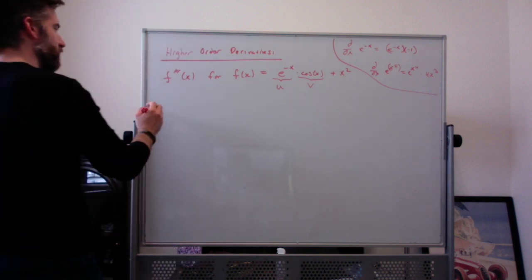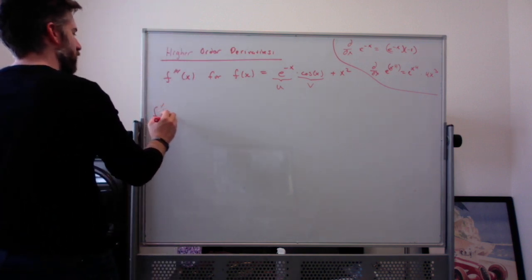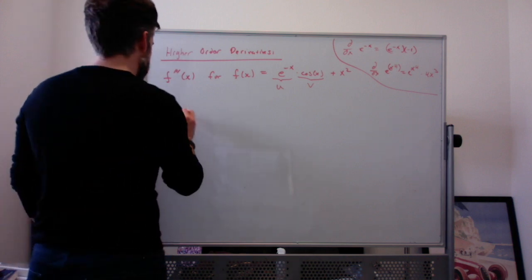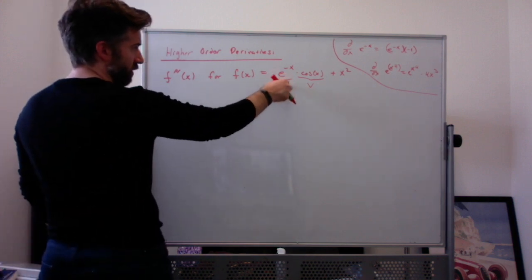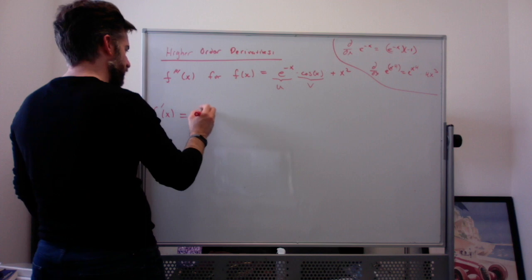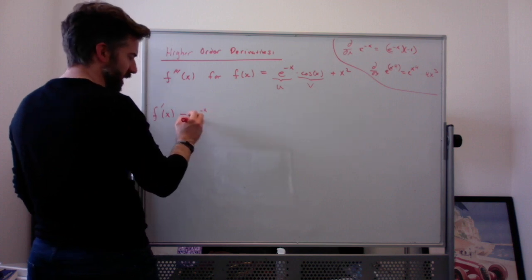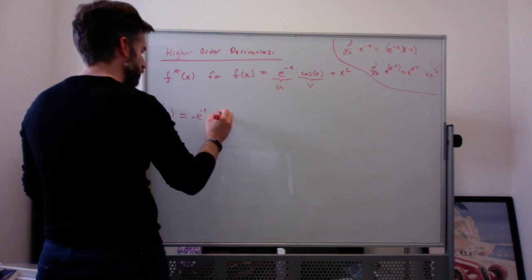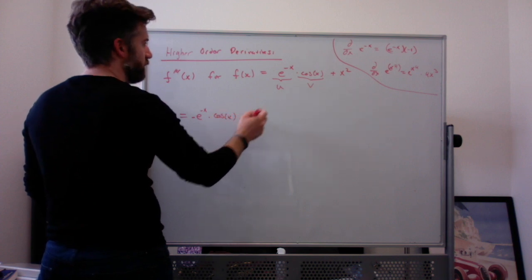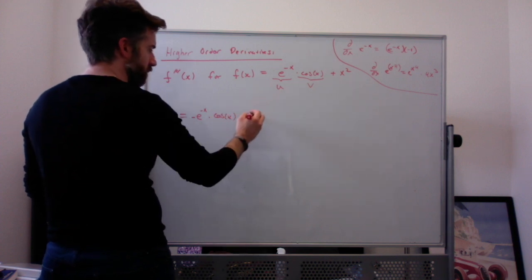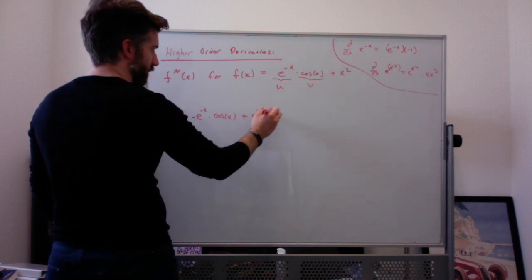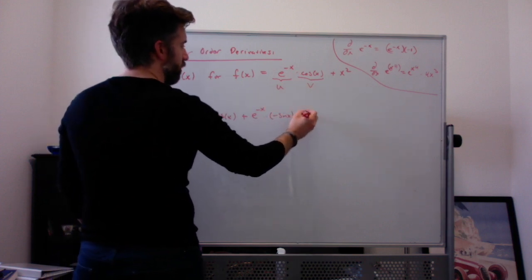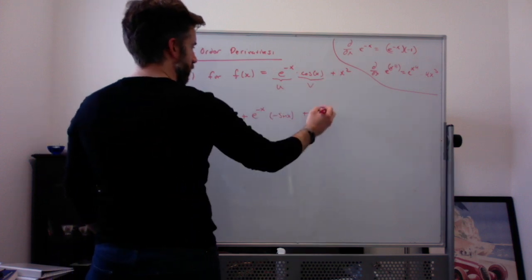Let's find the first derivative. When finding higher order derivatives like this, it just means repeated differentiation. So using the product rule: the derivative of e to the negative x is e to the negative x times negative 1 — put the negative in front — leave the cosine alone, plus e to the negative x times the derivative of cosine, which is negative sine, plus the derivative of x squared, which is 2x.